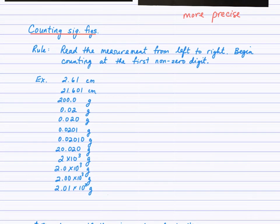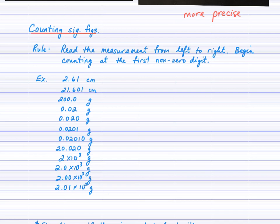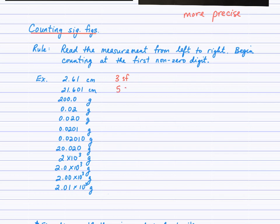With significant figures, we need to count the number of significant figures in a measurement. I condense the rules into one rule with one exception. Read the measurement from left to right and begin counting at the first non-zero digit. Looking at these examples: the first starts at a non-zero digit — one, two, three — three sig figs. The next one: one, two, three, four, five — five sig figs. Reading left to right, hit the first non-zero digit and count everything after it. One with a leading zero has one sig fig; another example gives two sig figs.